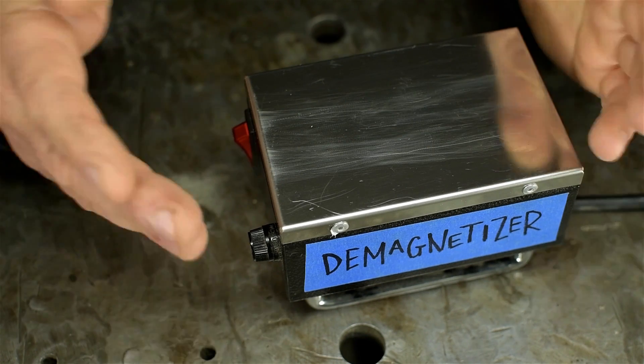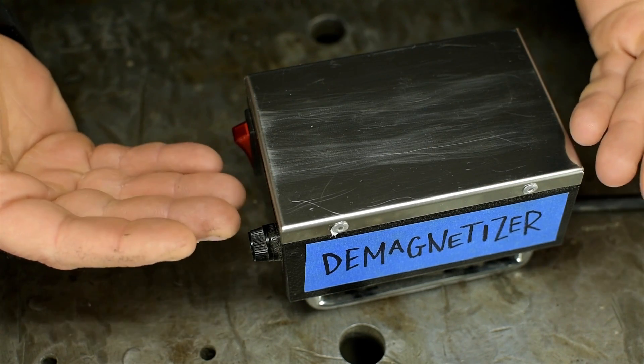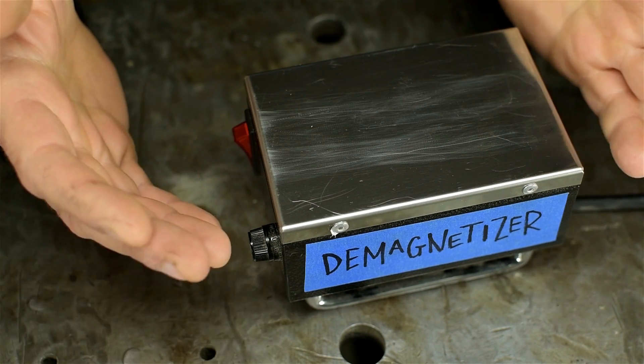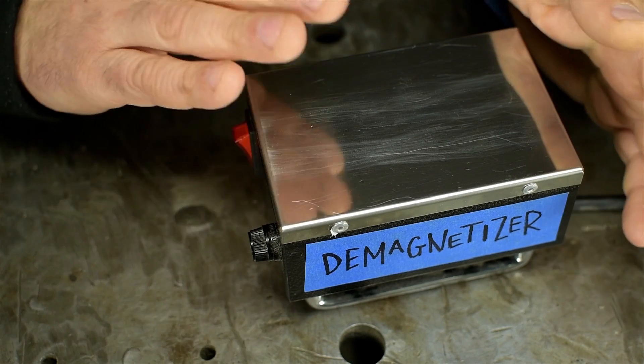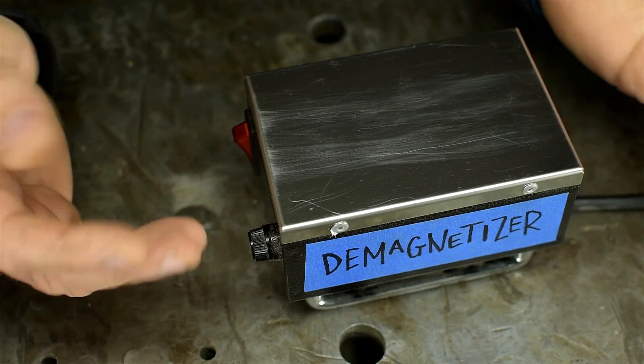Some of you, rightly so, may be wondering what one of these things is for. Well, if you have something magnetic that you don't want to be magnetic, put it on the top and hit the button. It will demagnetize it.